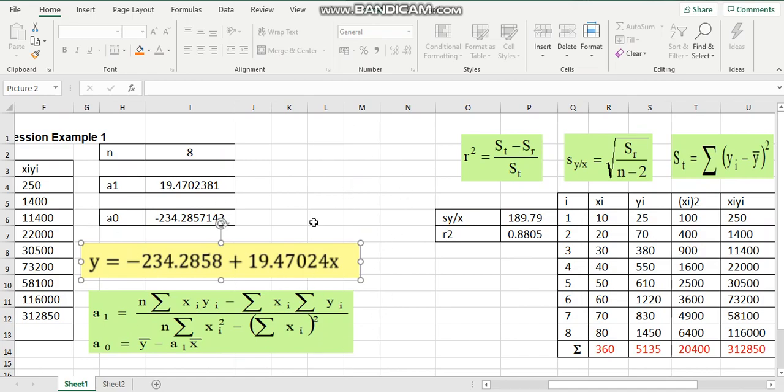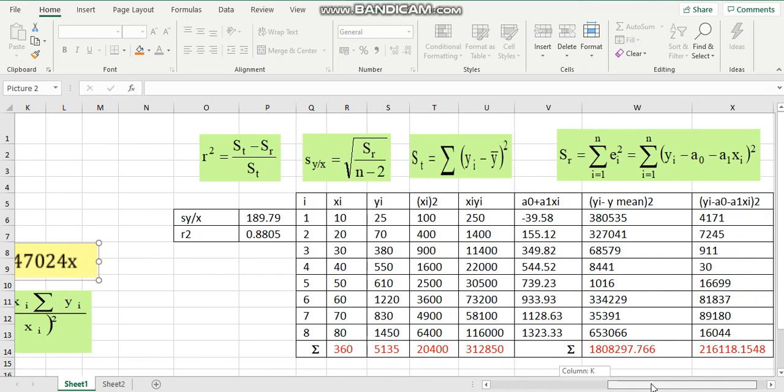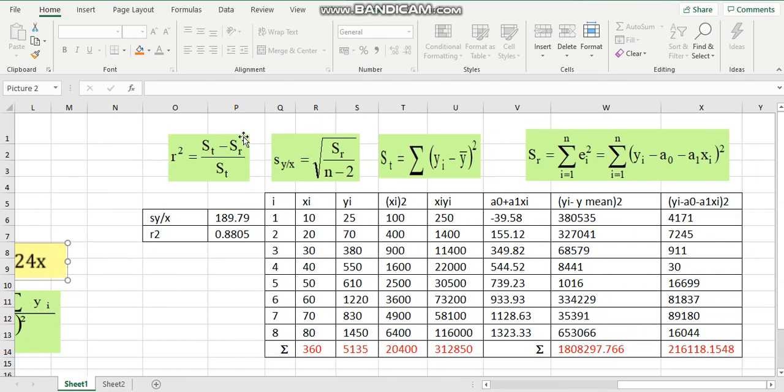Here is the linear least-square regression function. After that, we should analyze the error. We will determine the standard error and also the coefficient of determination, r-square. Let us look at the formula what data is needed. We need to calculate the ST and SR.